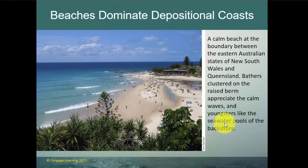A depositional coastline is low energy — this is what we basically think of as a beach, with calm waves and seawater that pools in the back shore. An erosional coast features cliffs and battering breaking waves, like parts of Hawaii, California, and the New England coastline north of Boston.